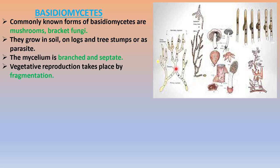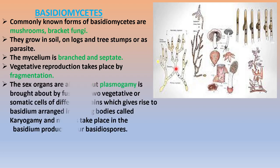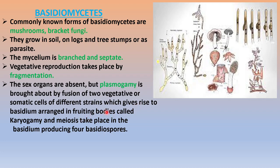Vegetative reproduction takes place by fragmentation. For sexual reproduction, the sex organs are absent, but plasmogamy is brought about by fusion of two vegetative or somatic cells of different strains, which gives rise to the basidium arranged in fruiting bodies. Karyogamy and meiosis then take place in the basidium, producing four basidiospores.